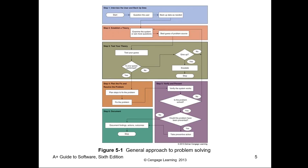The six steps are: Step one, interview users and back up data as required. Step two, establish a theory or theories. Step three, test your theory or theories. Step four, plan the fix and if possible resolve the problem — that depends on the policies in place per the organization. Step five, verify that you fixed the user's issue and if possible, prevent recurrence, which can include user training. Step six, document — document your findings, actions, concerns, and outcomes. Document as much as possible so that if the issue occurs again, another technician can review it.